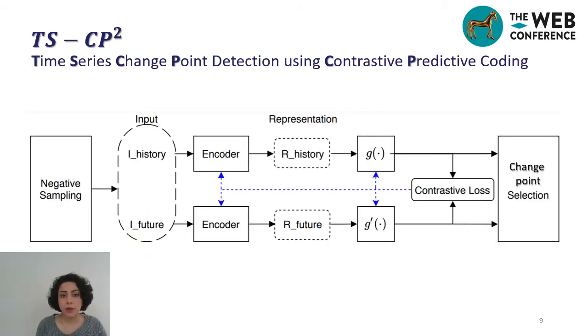This figure shows an overview of the proposed model. In the following sections, we will first discuss the encoder architecture and the loss function we use. Then we will explain the sampling strategy. And at the end, we will talk about the changepoint detection or boundary selection method. And then we will have the experiments.